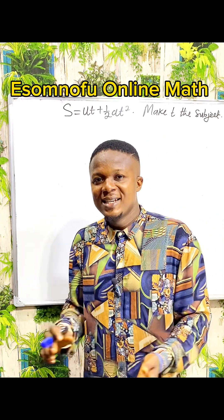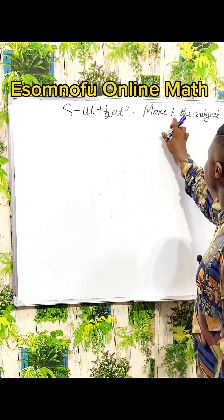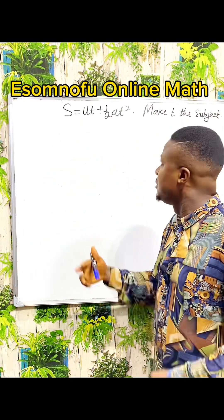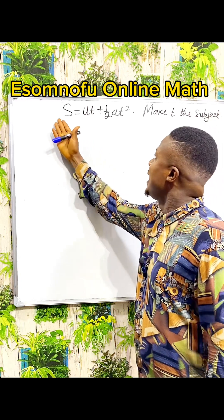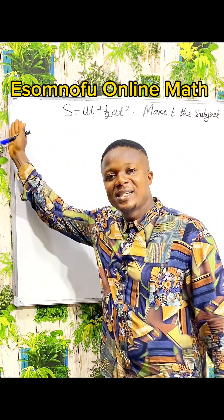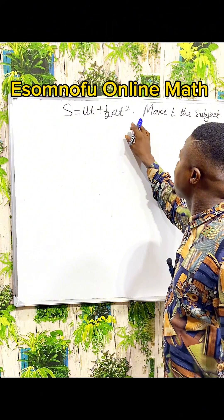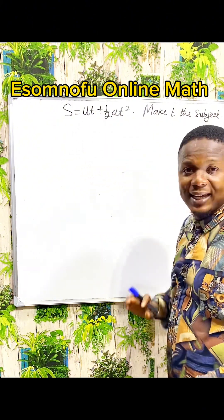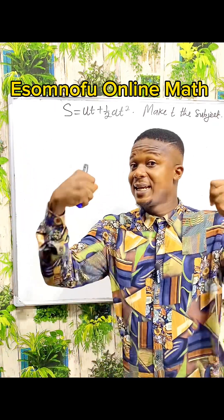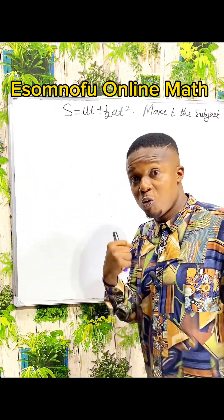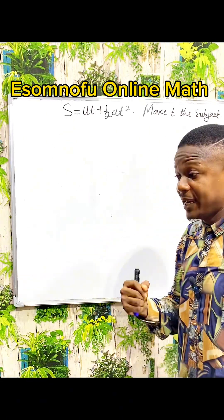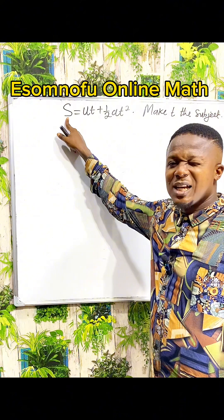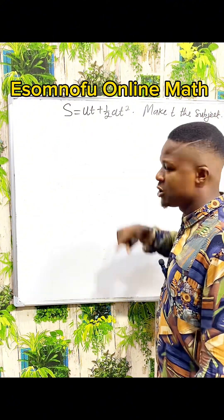Hello everyone. In this lesson we want to make T the subject of the formula. S is like the king of this formula because S owns the left hand side alone, while on the right hand side we have U, T, and A. S is staying alone, so S is the king. But now we want T to go away — we want T to be the new king. So let's make T the subject.